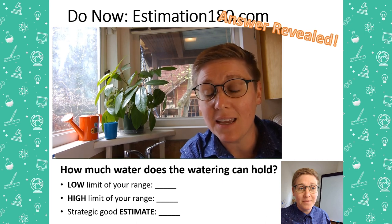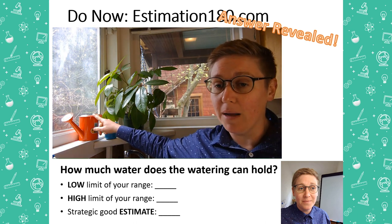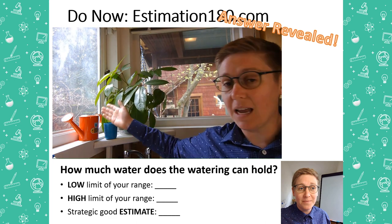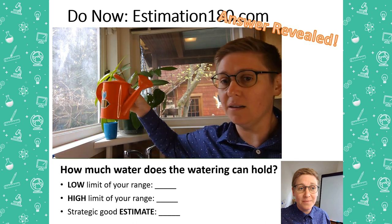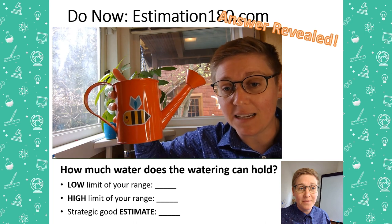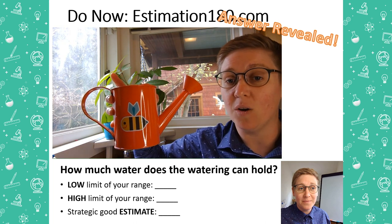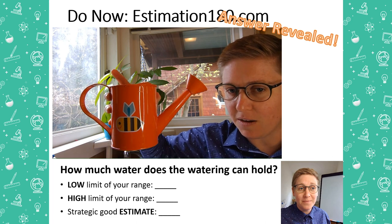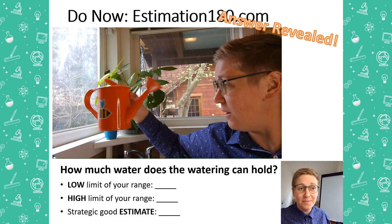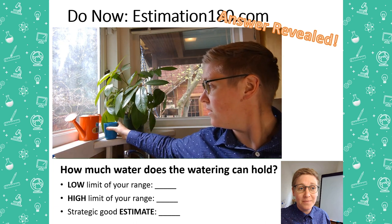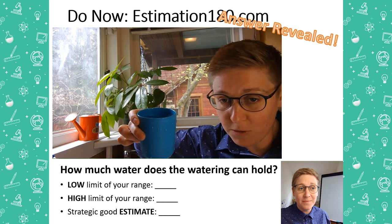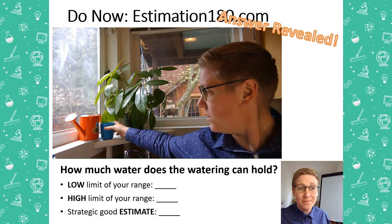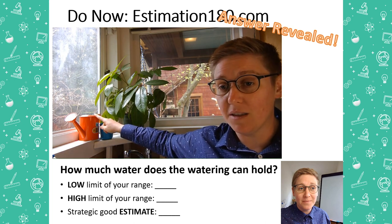I went to water my house plants the other day and realized it matters how much water my little watering can holds — it tells me how many plants I can water before I run out and how many times I'll have to fill it up. There's a cylinder for the main can and a little spout at the end. The water is right up to the edge of the spout. Comparing to this blue cup which holds 8 ounces or 1 cup of water — how many cups do you think this watering can holds?